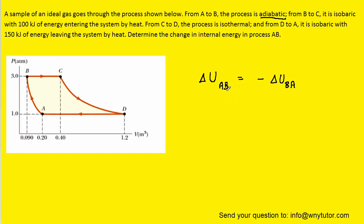And that strategy will involve the following fact: the change in internal energy from A to B, which is what we're trying to find, will actually be equal to the negative value of the change in internal energy from B to A. So in essence, if we could find the change in internal energy from B to A, we could then take the negative of that value and that would give us the change in internal energy for the process from A to B.